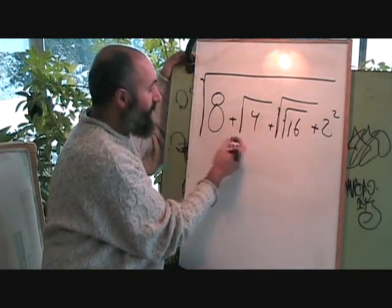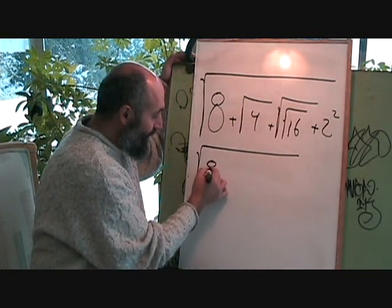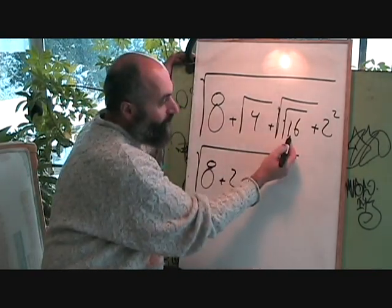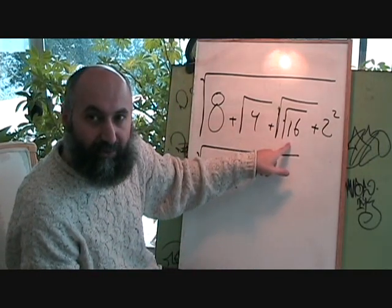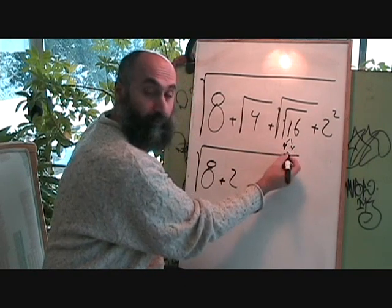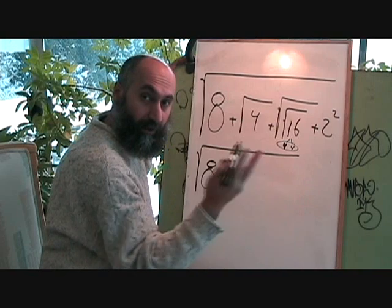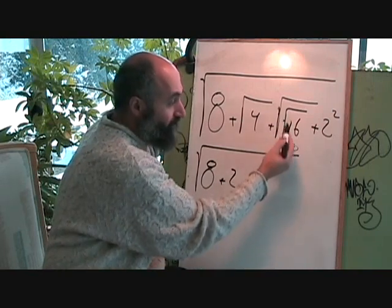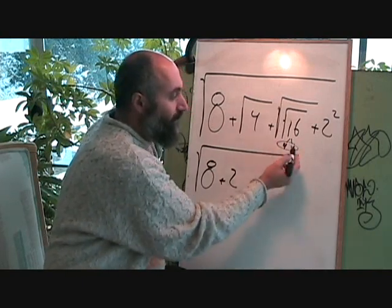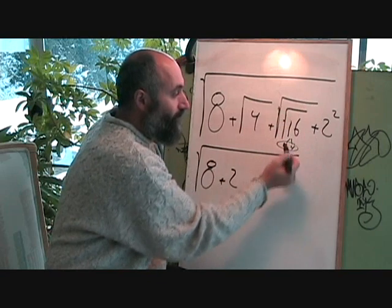So first, let's rewrite this. The 8 we can't simplify yet, so we just write it as 8. Plus the square root of 4 — we already know that's just 2. Over here, you've got the square root of 16. It breaks down to 4 times 4. Square root means you're looking for pairs. You've already found a pair so you don't have to break it down further. So the square root of 16 is 4, and then the square root of 4 is just 2.